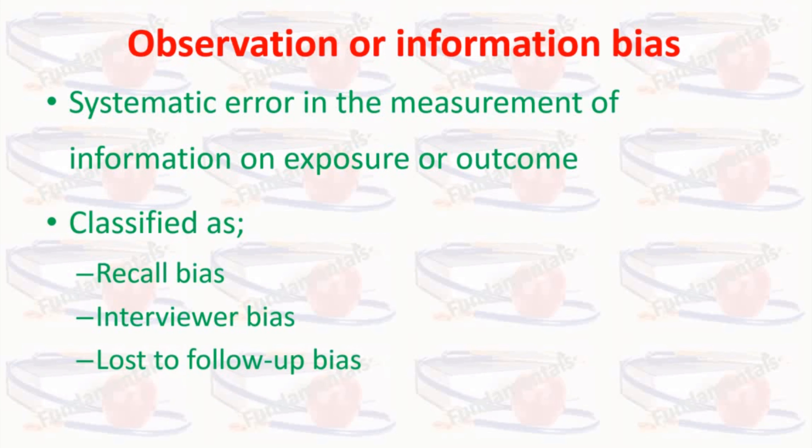Loss to follow-up is a major concern in a cohort or any prospective study. When persons lost to follow-up differ from those who remain in the study with respect to both the exposure and the outcome, any observed association will be biased. Even very small loss to follow-up can be a potential source of bias, as long as such loss is related to both exposure and disease.